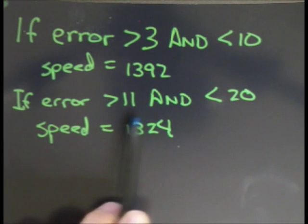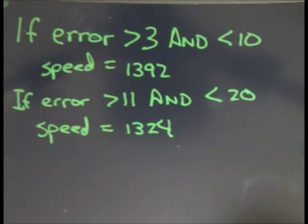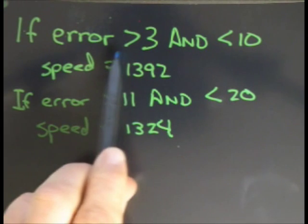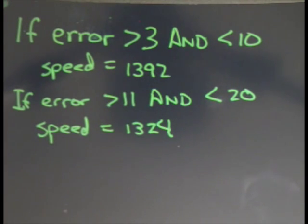it then looks at 11 to 20, which has a greater error, so I want it to go faster. This is a loop continually tracking the error value, and as it gets closer, when it gets into this range, it automatically slows down to that lower speed.